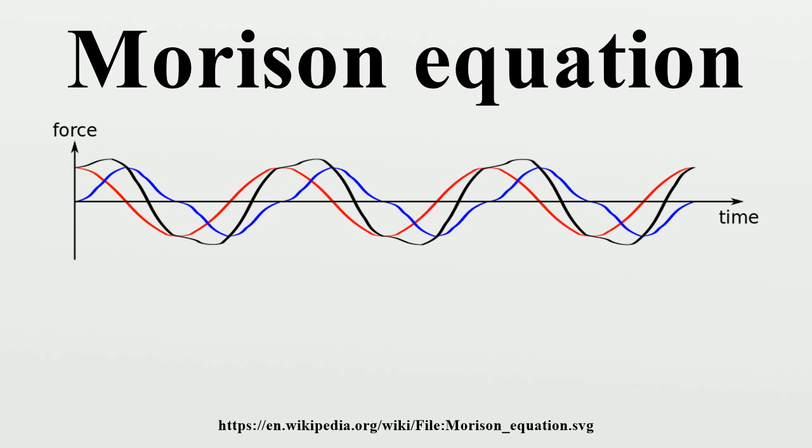The inertia force is of the functional form as found in potential flow theory, while the drag force has the form as found for a body placed in a steady flow. In the heuristic approach of Morrison, O'Brien, Johnson and Schaaf, these two force components, inertia and drag, are simply added to describe the force in an oscillatory flow.